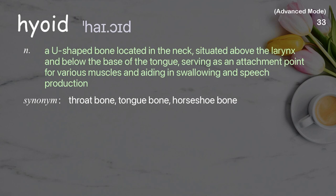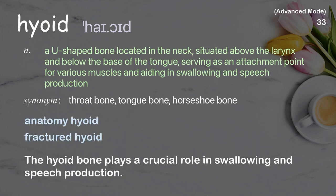Hyoid: a U-shaped bone located in the neck, situated above the larynx and below the base of the tongue, serving as an attachment point for various muscles and aiding in swallowing and speech production. Examples: anatomy hyoid; fractured hyoid. Example sentence: The hyoid bone plays a crucial role in swallowing and speech production.